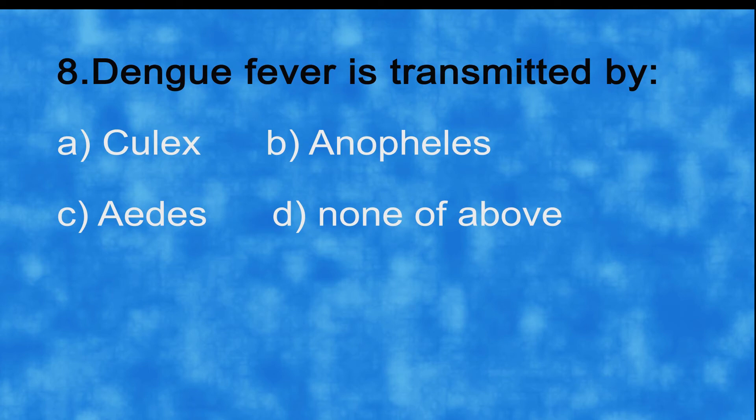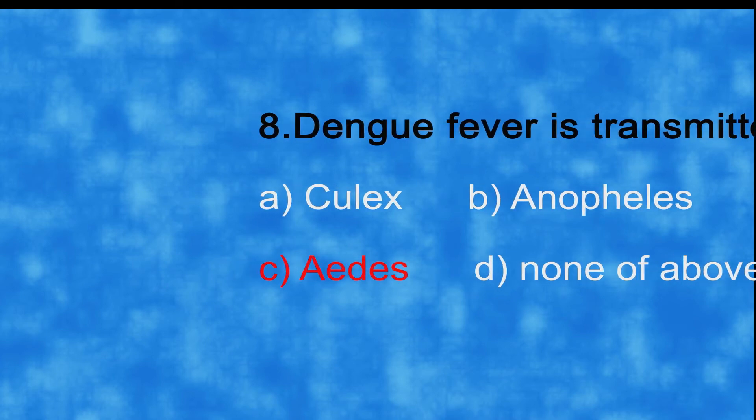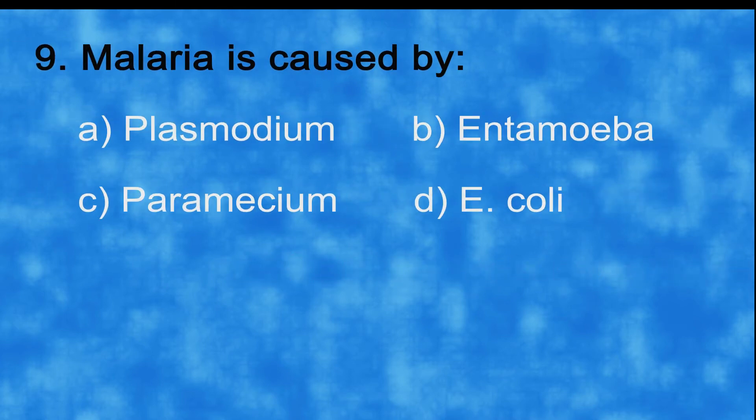Dengue fever is transmitted by a) Culex, b) Anopheles, c) Aedes, d) none of above. And the correct answer is c) Aedes. Number nine: malaria is caused by a) Plasmodium, b) Entamoeba, c) Paramecium,